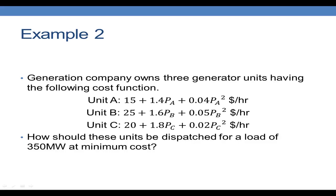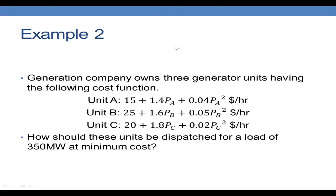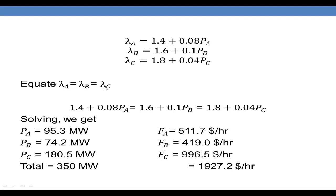I have solved this problem here. Lambda A is the first derivative of the cost equation, and we equate lambda A, lambda B, and lambda C. After equating, the power to be generated from generator A is 95.3 megawatts, PB is 74.2 megawatts, and PC is 180.5 megawatts — totaling 350 megawatts. The cost of generating 350 megawatts is 1927.2 dollars per hour, which is the minimum cost achievable.